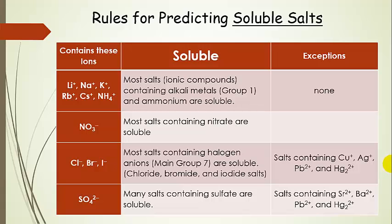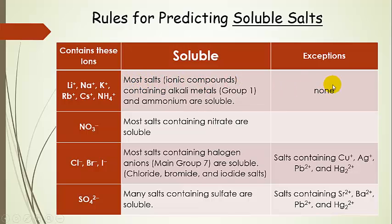These are rules for predicting soluble salts. If a salt contains group one metal cations — lithium, sodium, potassium, rubidium, cesium — or ammonium, those salts are soluble. I've put no exceptions; basically everything we're going to work with is going to be soluble if it contains these cations. The chart shows which ions make a salt soluble, under what conditions, and any exceptions — exceptions meaning the salt is not soluble.